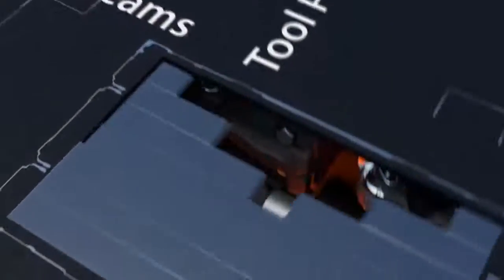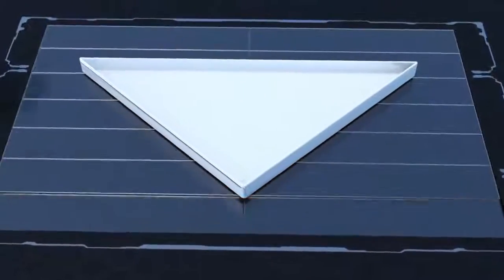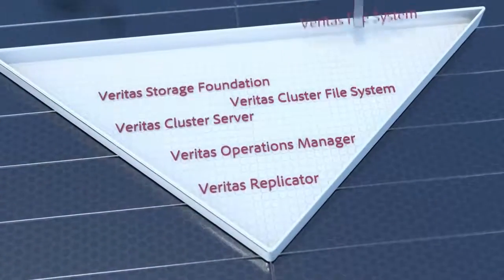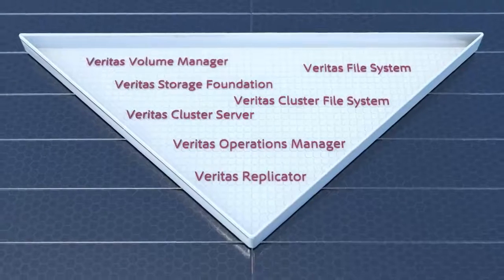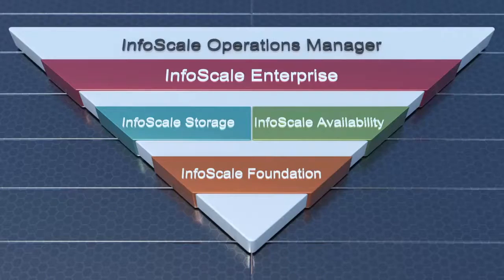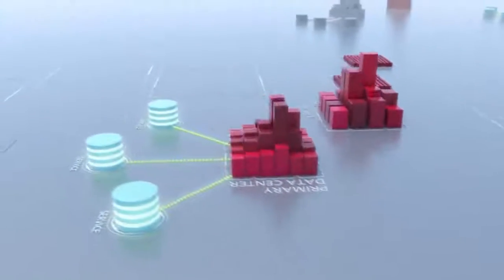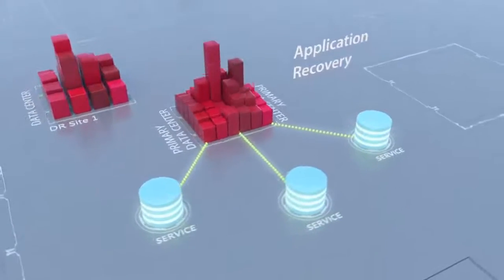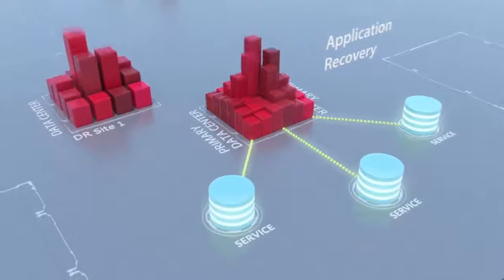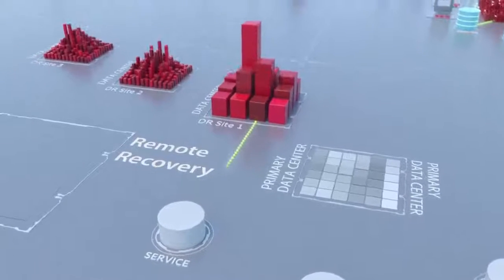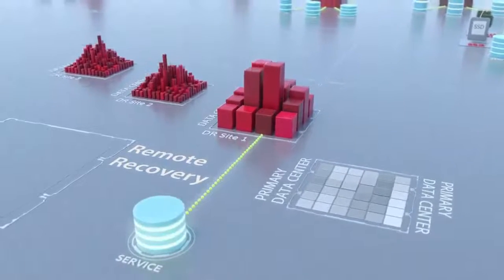Veritas has a long-standing heritage of innovation with leading products such as Veritas Storage Foundation, Veritas Cluster File System, and Veritas Cluster Server. We're proud to reintroduce these solutions as the Veritas InfoScale family, providing application resiliency and software-defined storage solutions for your critical physical and virtual business services. Veritas InfoScale availability solutions help you meet service level agreements through local and wide area recovery for critical applications and data. InfoScale automates and orchestrates the recovery of multi-tier business services across virtual and physical platforms.